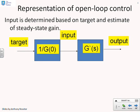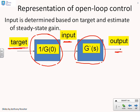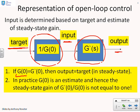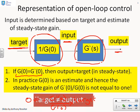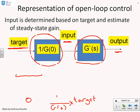Here's a block diagram representation of what's going on. You're given a target — that's the output you want. You have a model of what you think the system gain is, and you divide the target by the system gain to get the input. That input goes through the actual process G(s) to give you the output. In practice, your model G(0) will not be the same as the real G(0). If they were the same, the output would equal the target. But in general, output equals G(0) over G(0) times the target, and if those two gains differ, the output will not match the target — so open loop control will not work.